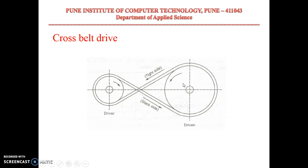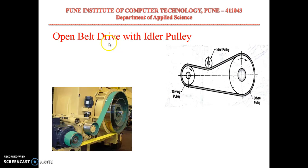Another type is a cross belt drive, wherein the two shafts are rotating in different directions. Here, the belt crosses over itself, so the arc of contact will be more, allowing a greater amount of power to be transferred. However, the problem is that as the belts cross, there will be a rubbing action between the two belt sections, leading to wear over time. For the driver pulley rotating in one direction, it pulls the belt on one side making it the tight side, and delivers it on the other side making it the slack side.